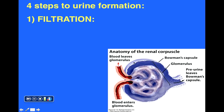Beginning with filtration. Here we see a slice through a renal corpuscle — the outer Bowman's capsule and the ball of capillaries, the glomerulus, inside. During filtration, blood pressure simply forces the liquid portion of blood out of these glomerular capillaries. The large components — blood cells, red blood cells, white blood cells — remain in the capillaries, but a lot of the liquid portion of blood is forced out.